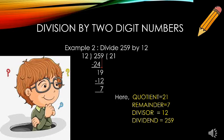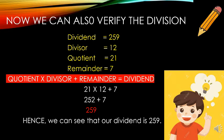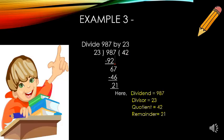Our dividend is 259. Now we can also verify the division. According to the division algorithm, quotient multiplied by divisor plus remainder equals dividend. So when we multiply 21 by 12, we get 252. Now add 7 to it and we get 259. Here we can see that 259 is exactly the same dividend that we took. Hence we verified our division.